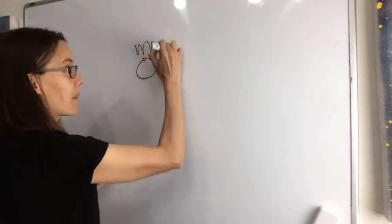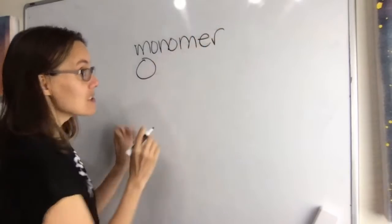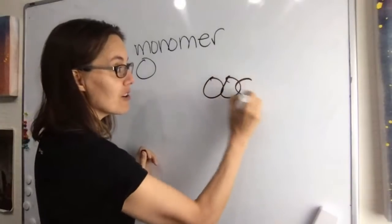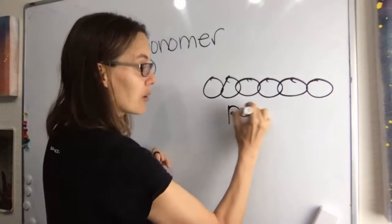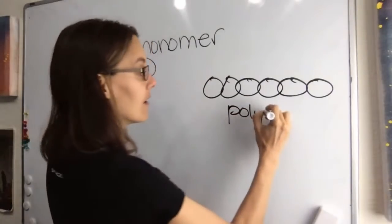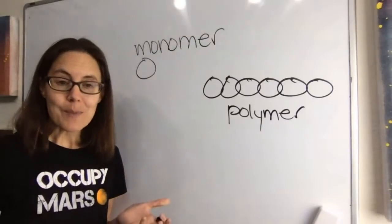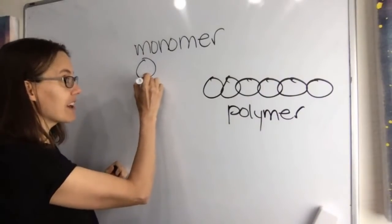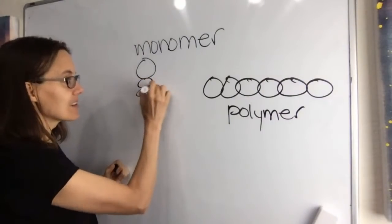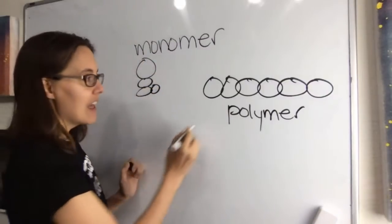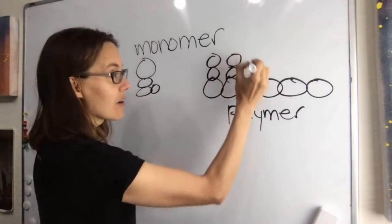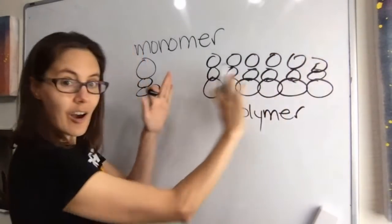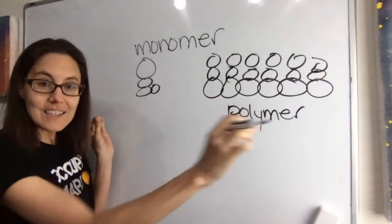You have to understand these words to be able to understand what glue is and how slime works. A monomer comes from the word 'mono,' which means one, and 'mer,' which means unit — a monomer is just one unit. If you put a bunch of monomers together, you get a polymer. 'Poly' means many, so that's many units. Glue is made out of PVA, polyvinyl acetate. That means you take one little unit of polyvinyl acetate — it actually looks kind of like a little L — and if you loop them all together, you get a big long string of these little L's that are all linked together.